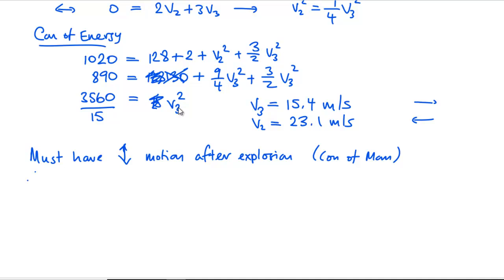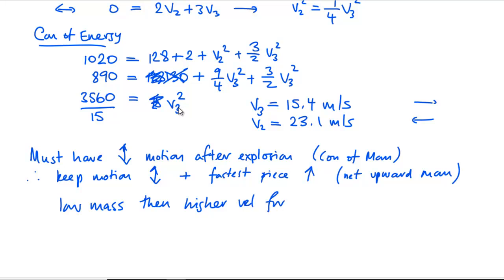Due to momentum, so that's conservation of momentum. We're going to be best off, so therefore keep motion in that direction, that way. And it would also make sense to have the fastest piece going upwards because we want, we can have a net upwards momentum.